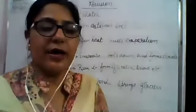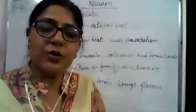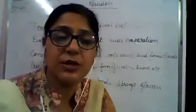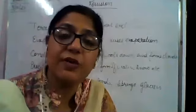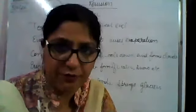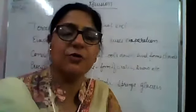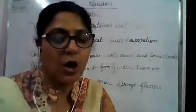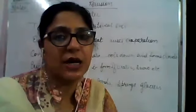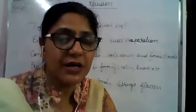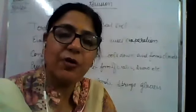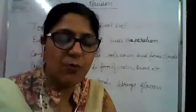Today I am going to revise ocean circulation. Ocean is always in circulation — it is never in a static form. There are three types of categories of ocean movement: one is in the form of waves, second in the form of tides, and third in the form of currents.